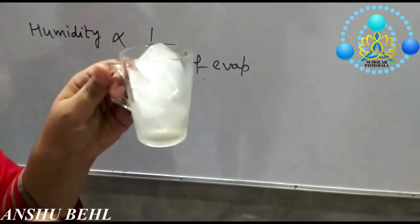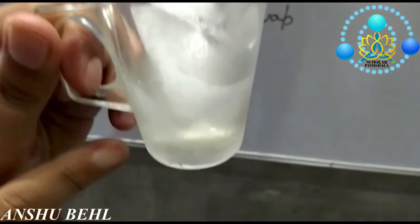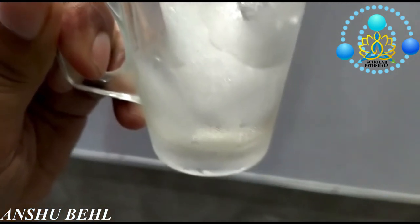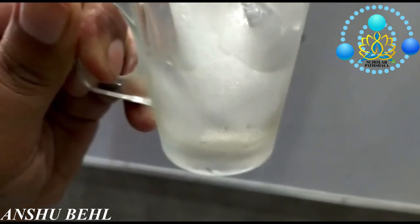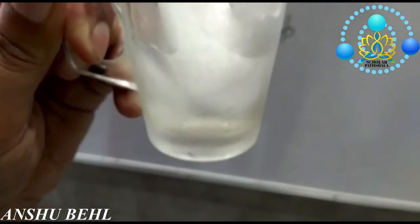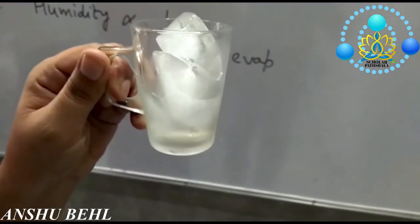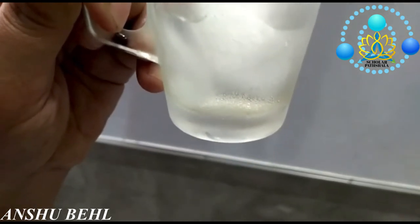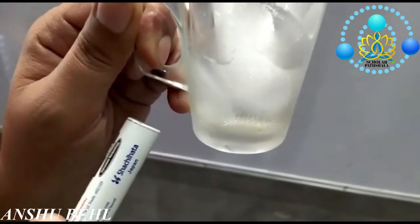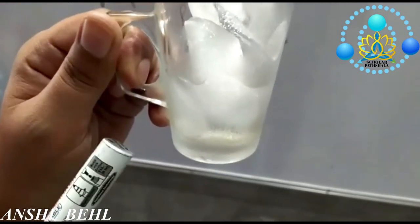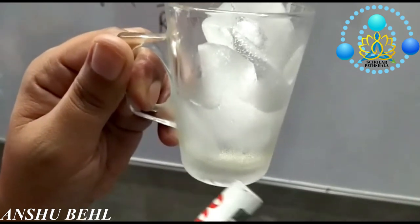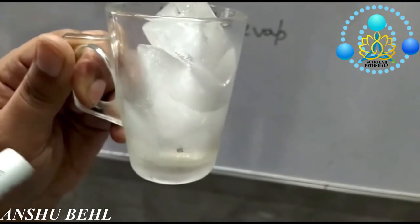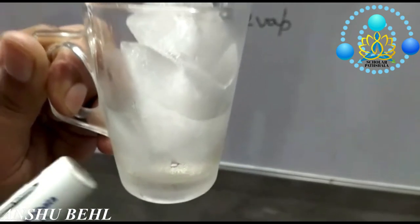Another question: when ice is kept in a glass, tiny water droplets appear on the outer surface of the glass — where does this water come from? These water molecules come from the air outside. Air strikes the cold surface of the glass, and the moisture present in the air condenses on the cold surface. That is why you can see condensed water droplets on the outside of a glass containing ice, cold drinks, or chilled water.